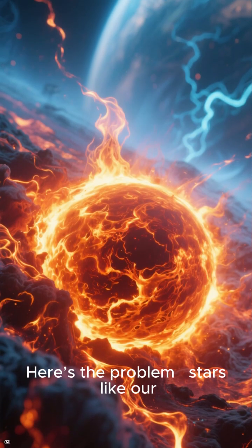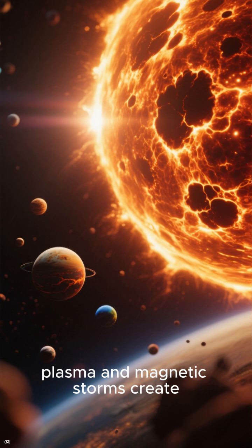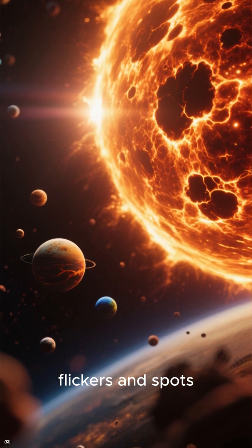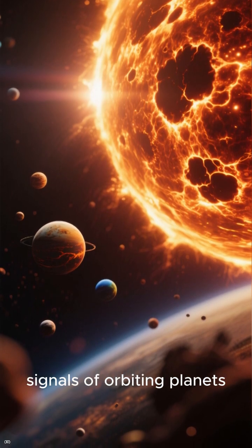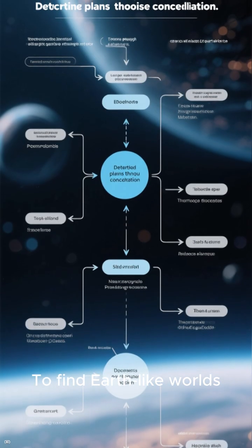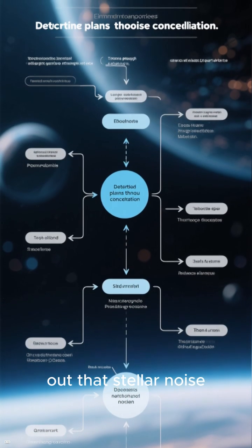Here's the problem. Stars like our sun are chaotic. Their boiling plasma and magnetic storms create flickers and spots that drown out the faint signals of orbiting planets. To find Earth-like worlds, scientists first have to understand and cancel out that stellar noise.